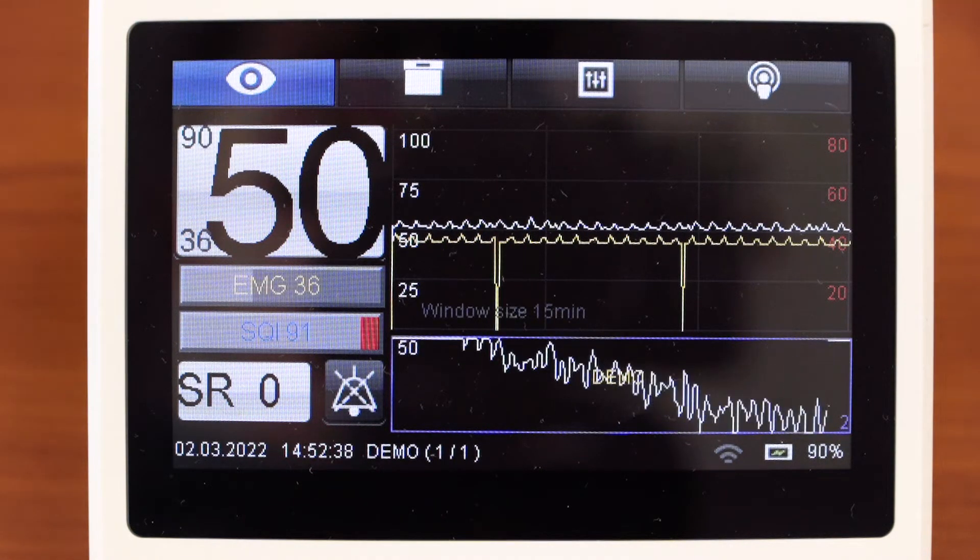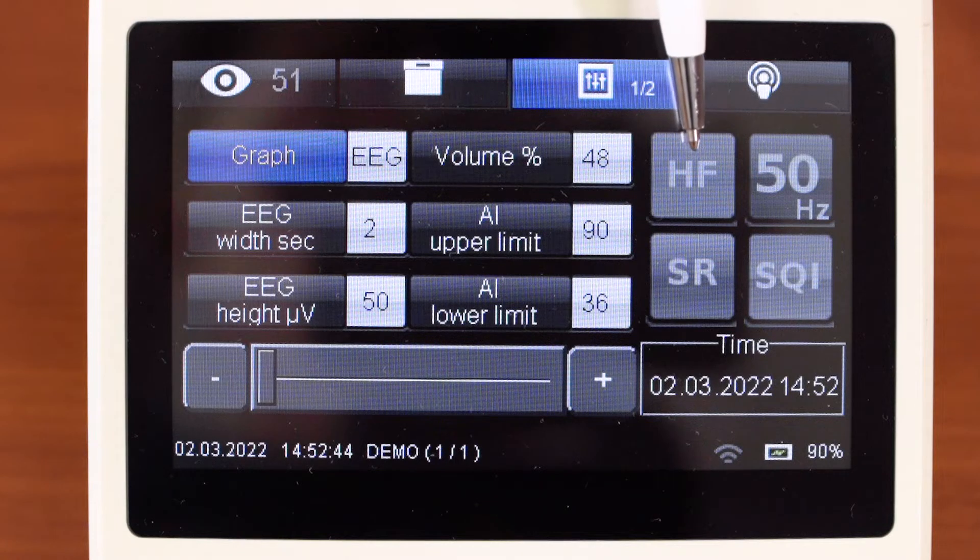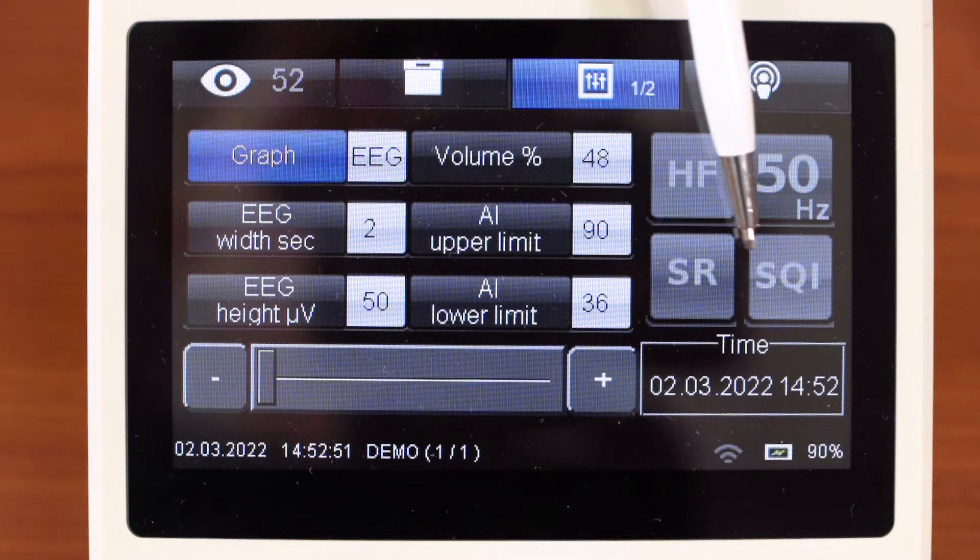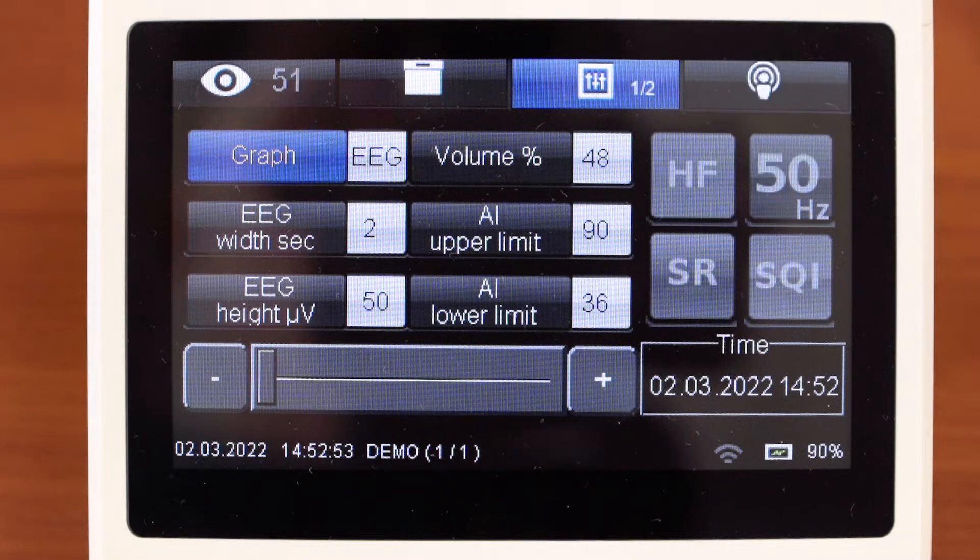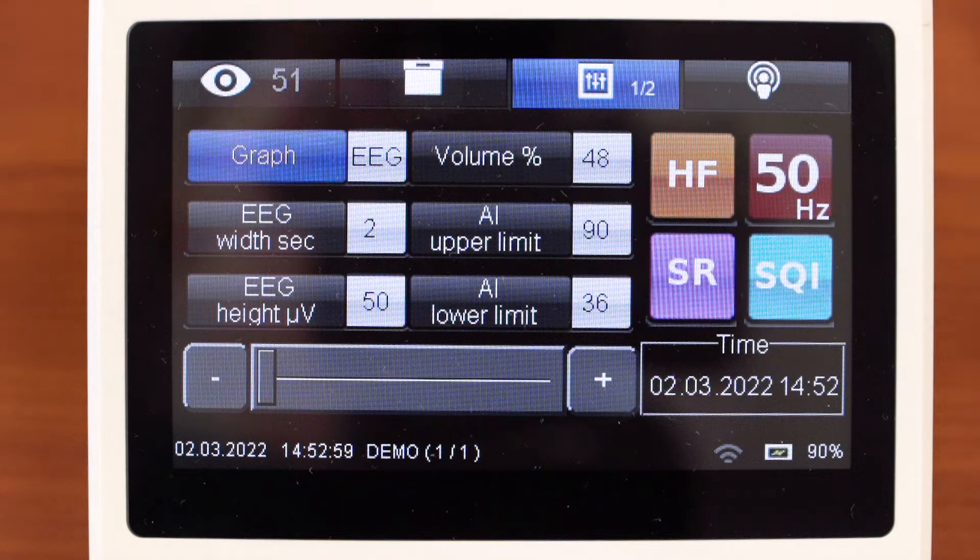Open the window settings. There are high frequency noise, power line disturbances, suppression rate, and signal quality index. To add graphs just press these buttons. You will see additional graphs in monitoring window.